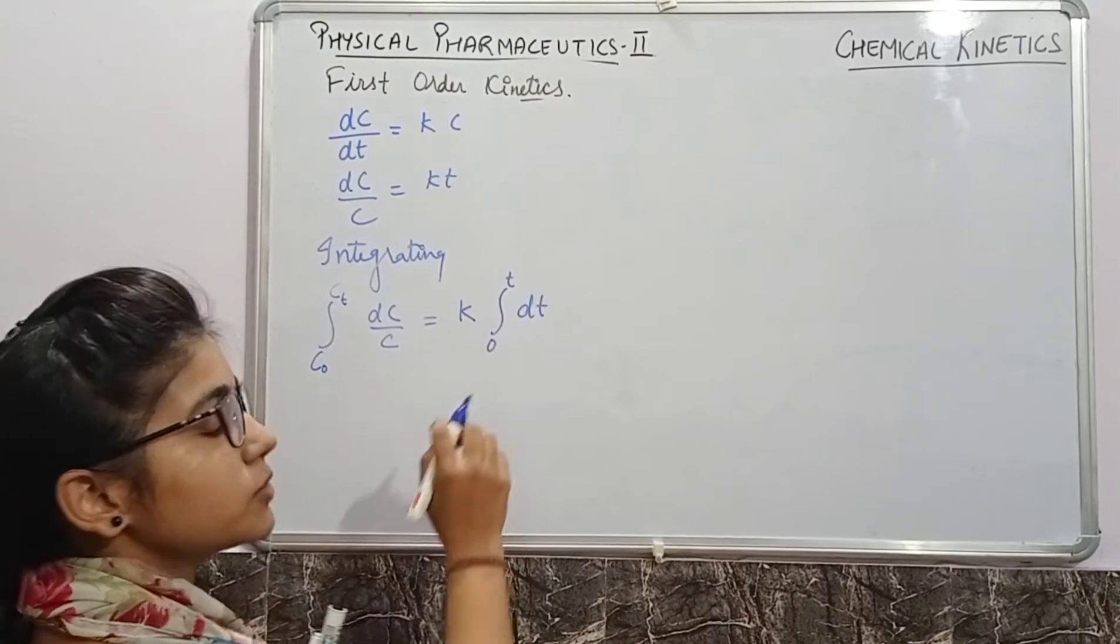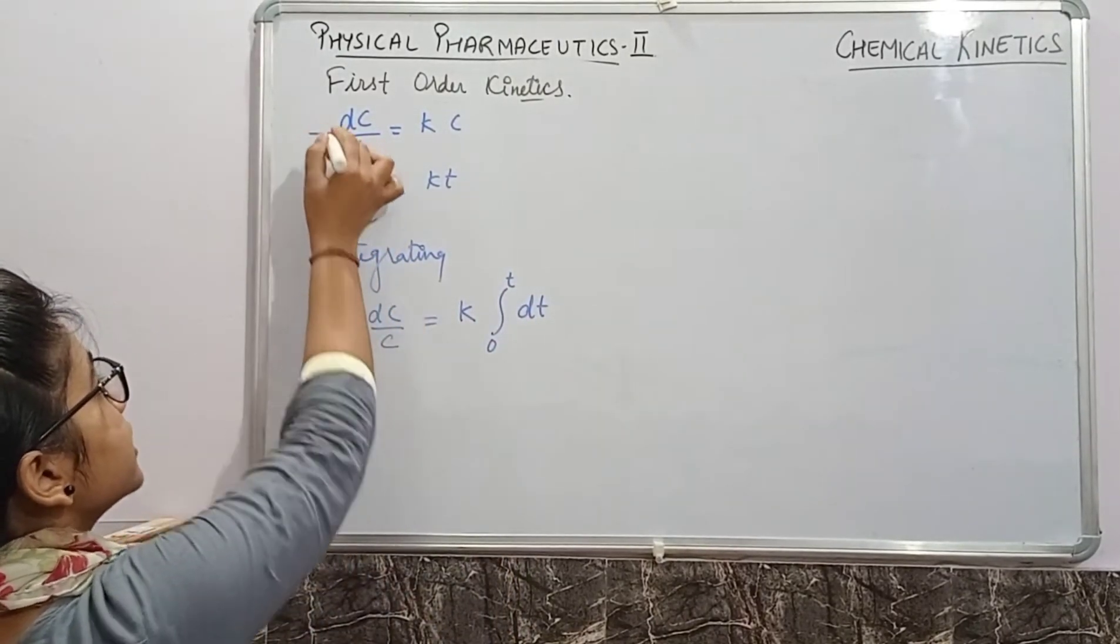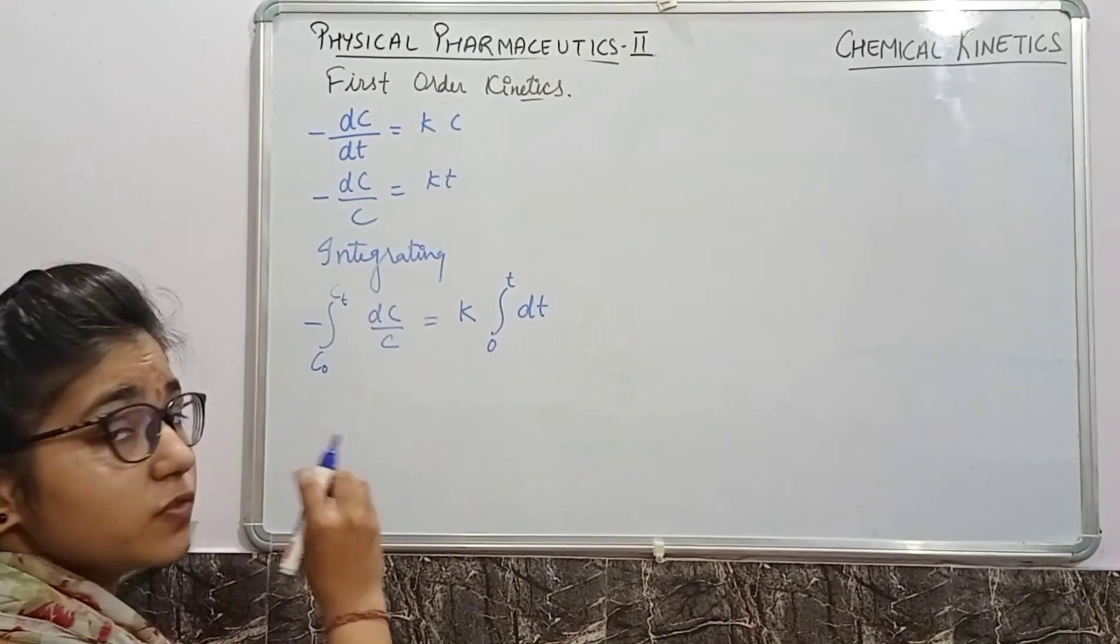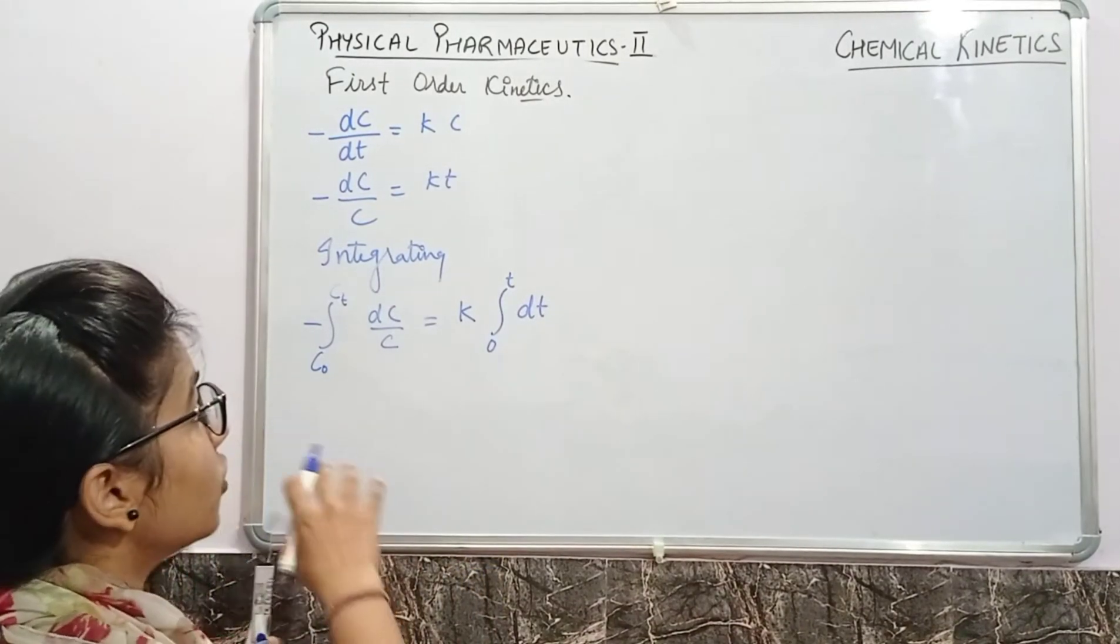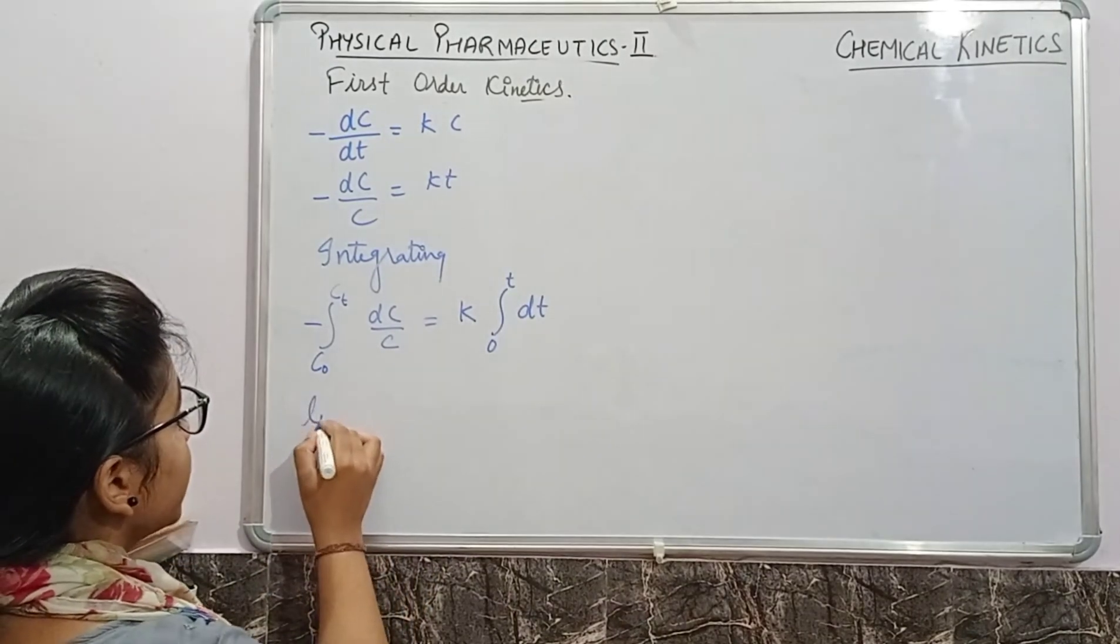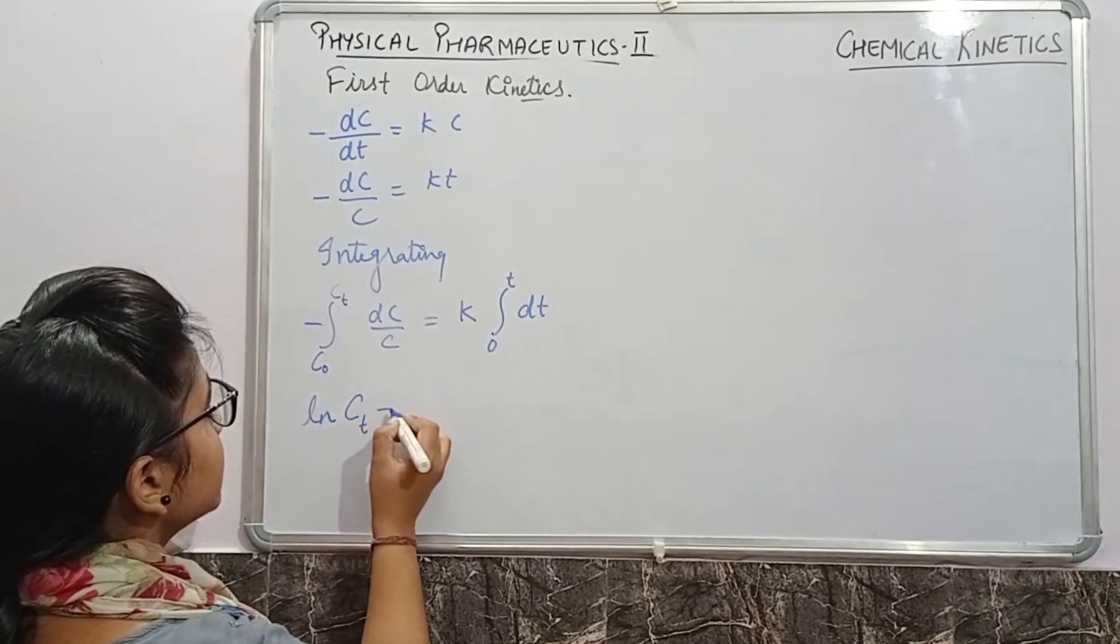After that, k is the proportionality constant and dt is the time, and time is lying from zero to t. Here the concentration is continuously declining, so the whole reaction will be in negative mode. After this, when you integrate this, you have to put the log value on this.